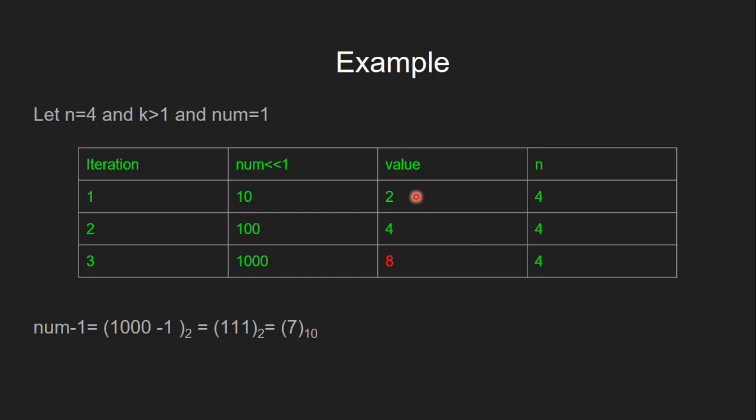Now it becomes 2. We check if 2 is smaller than or equal to 4. That is true, so we go for the second iteration. In the second iteration, we again shift num by one position and its value is 4. Since 4 is smaller than or equal to 4, the condition is true, and we go for the third iteration.